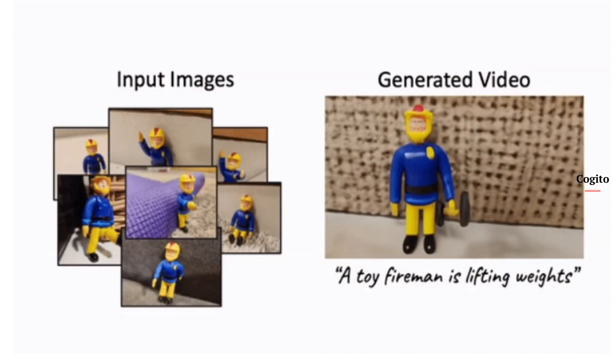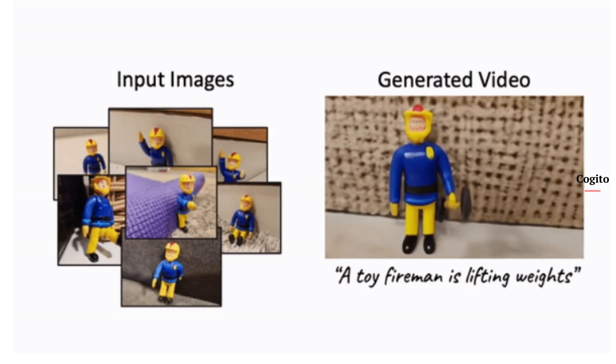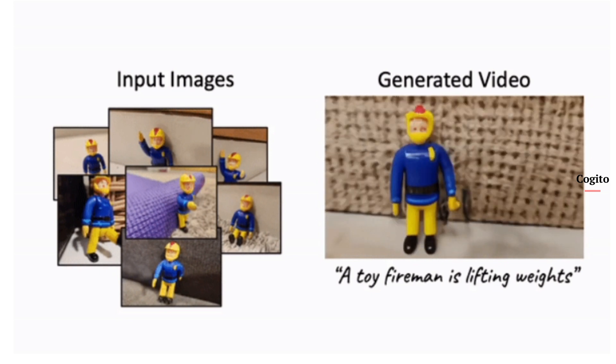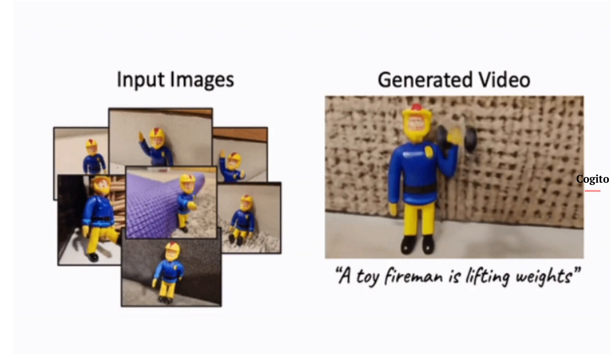Given a small collection of images showing the same subject, Dreamix can generate new videos with the subject in motion. In this example, given a small number of images of the toy fireman, Dreamix is able to extract the visual features, then animate it to lift weights while maintaining fidelity and temporal consistency.